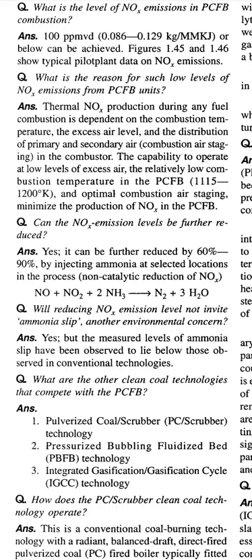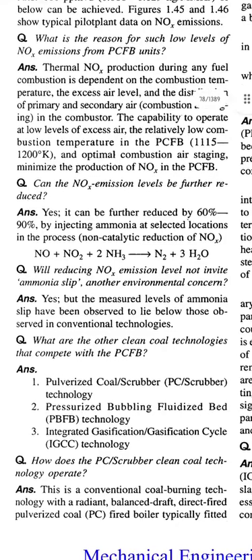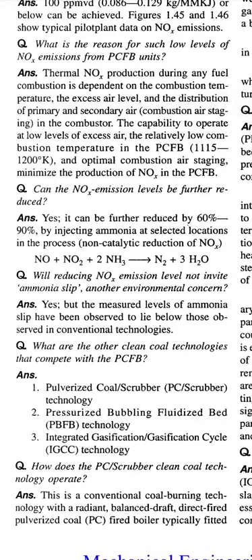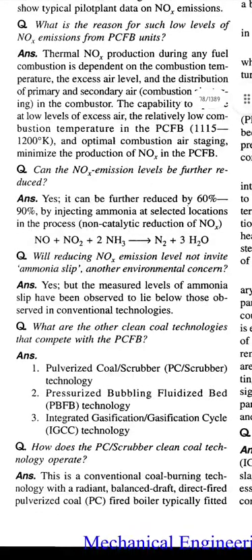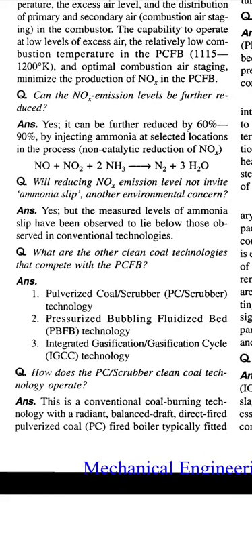Question: Can the NOx emission levels be further reduced? Answer: Yes, it can be further reduced by 60% to 90% by injecting ammonia at selected locations in the process — non-catalytic reduction of NOx: NO + NO₂ + 2NH₃ → N₂ + 3H₂O. Question: Will reducing NOx emission levels not invite ammonia slip — another environmental concern? Answer: Yes, but the measured levels of ammonia slip have been observed to lie below those observed in conventional technologies.